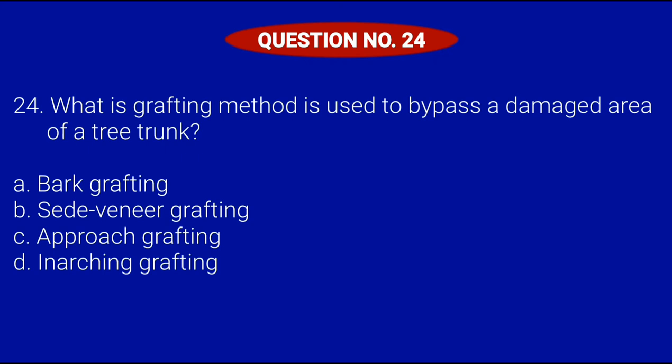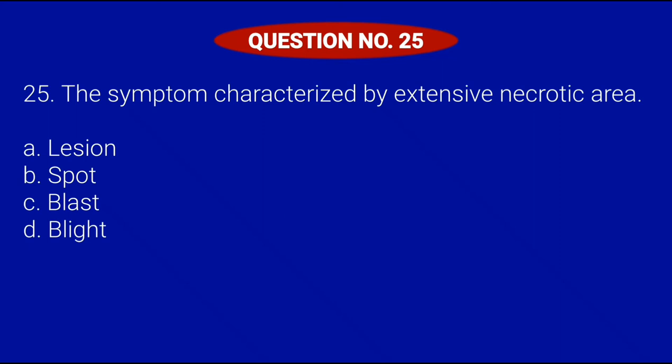Question number 24. What grafting method is used to bypass a damaged area of a tree trunk? Letter A, Bark grafting; Letter B, Seed veneer grafting; Letter C, Approach grafting; or Letter D, Inarching grafting. Correct answer is Letter D, Inarching grafting.